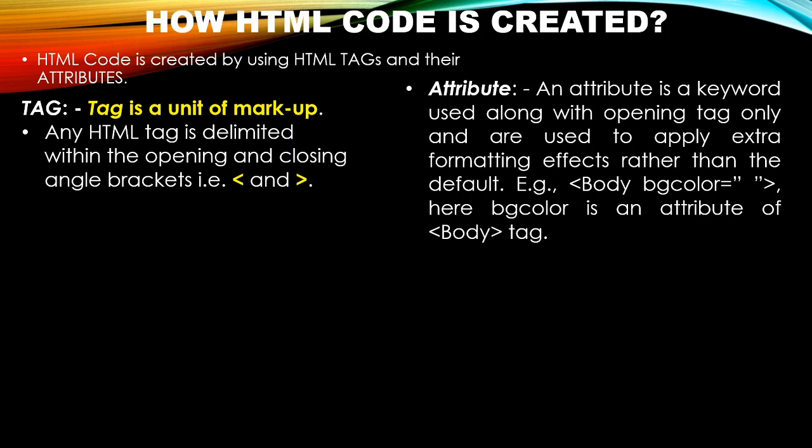For example, if you want to change the background color of the body of the web page, you can use the body tag with its attribute bgcolor (bgcolor stands for background color). The default background color of a web page is white. If you want to change it to any color of your choice, you need to use the bgcolor attribute. An attribute is used to apply extra formatting effects beyond the default.